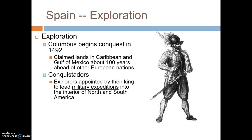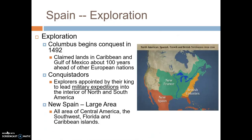Their goals were to conquer territory from the Native Americans, get treasure and gold, and spread Christianity. New Spain ended up becoming a very large area. The Spanish gained control of all of Central America, what we think of today as the southwestern United States, Florida, the Caribbean islands, and their control extended south into South America — most of South America other than part of what we would think of today as Brazil.